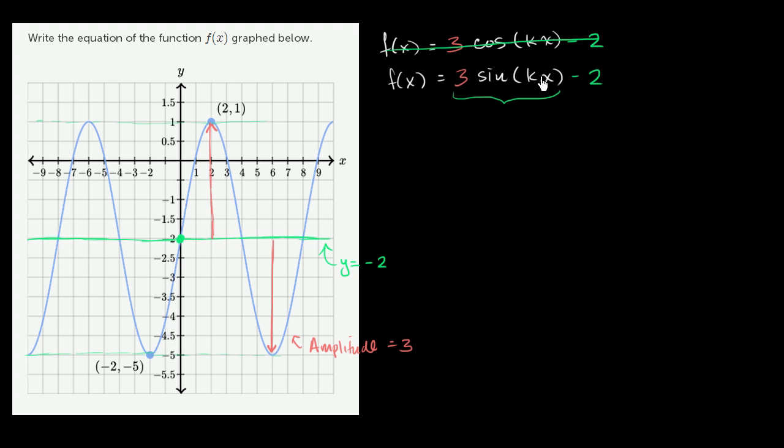And so we are left with this. And we just really need to figure out what could this constant actually be? And to think about that, let's look at the period of this function. So to go from, and we could, let's see. If we went from this point where we intersect the midline.